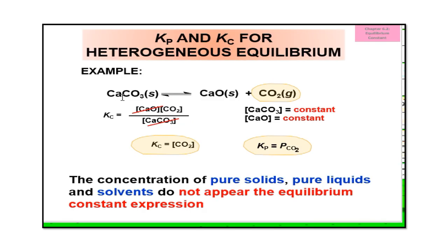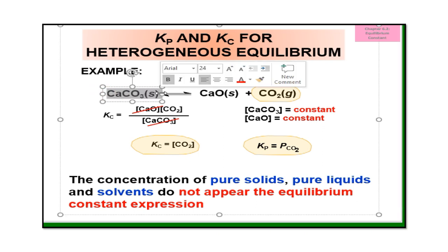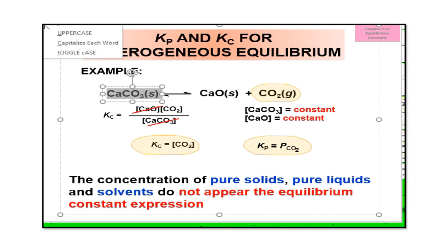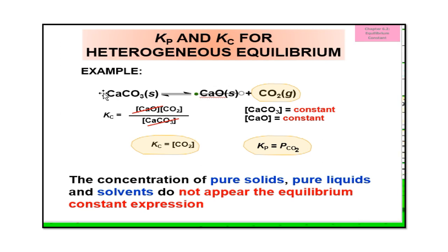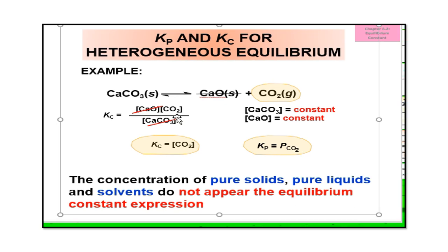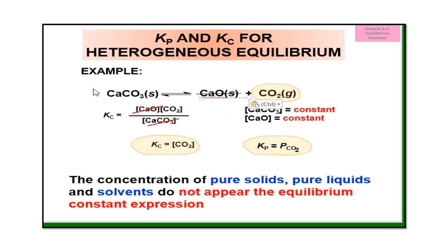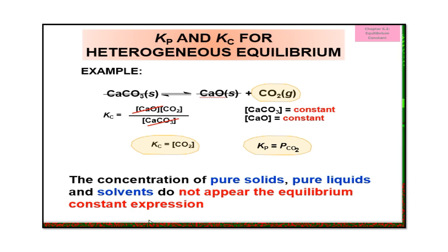For Kp and Kc in heterogeneous equilibrium, remember: product over reactant, but for solids we ignore them. For gases we include them, but solid and liquid are ignored. The concentration of pure solid and pure liquid do not appear in the equilibrium constant expression — always remember this.